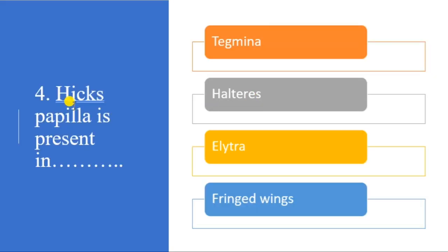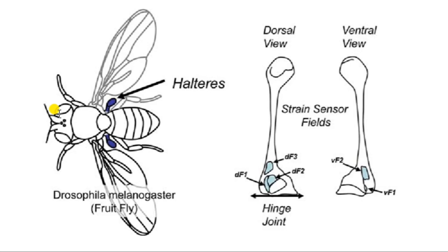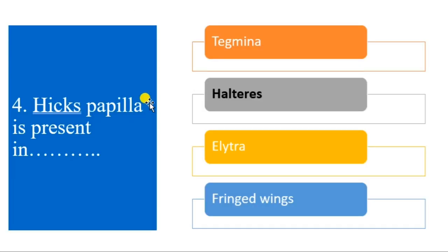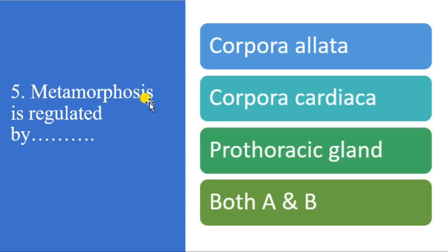Fourth question: hyx papilla is present in which structure? Among the different kinds of insect wings, the hyx papilla is present in halteres. Halteres are the hind wing modification in true flies.